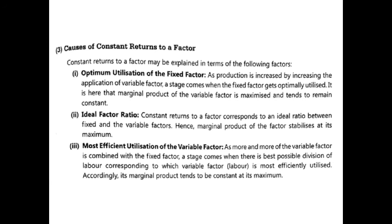The third cause is most efficient utilization of the variable factor. As more and more of the variable factor is combined with the fixed factor, a stage comes when there is the best possible division of labor, corresponding to which the variable factor is most efficiently utilized. When variable factors reach their maximum efficiency, total product increases at a constant rate — demonstrating constant return to a factor.